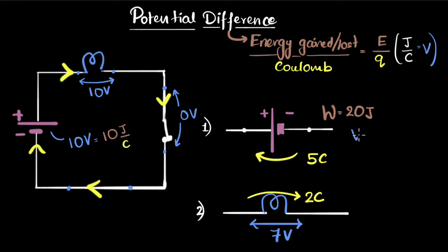All right. We know that potential difference is energy gained per coulomb, so per charge. Now, it's given that the battery does 20 joules of work. Remember, when you do work, you transfer energy.